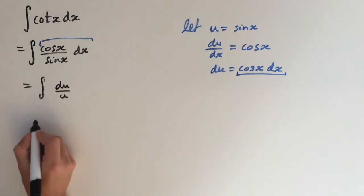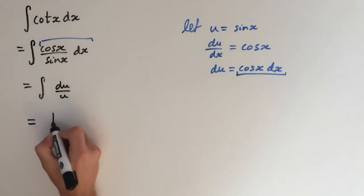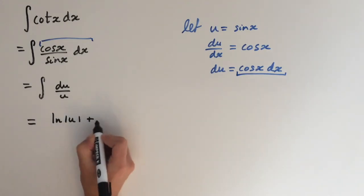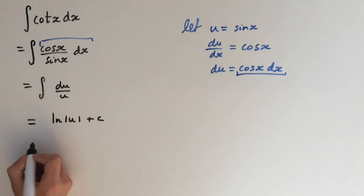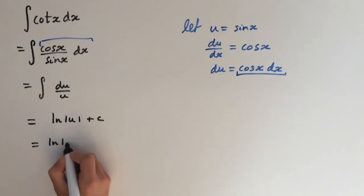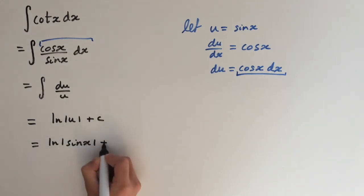So integral of 1 over u is just the natural logarithm of u plus c. And now we can substitute back in for u. And this equals sin x. So the integral for cot x is natural logarithm of sin x plus c.